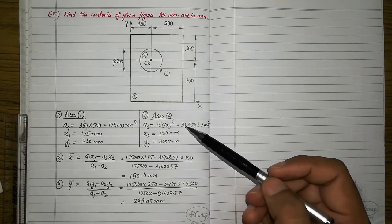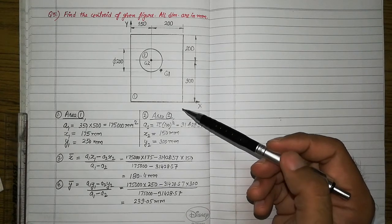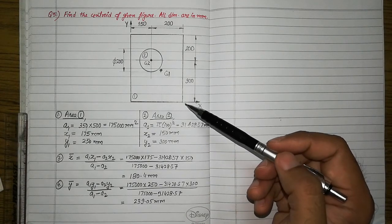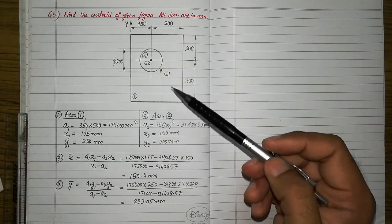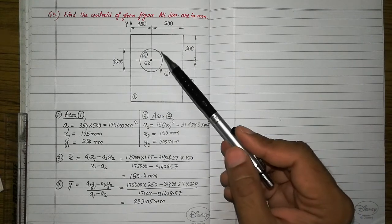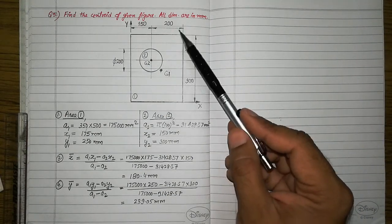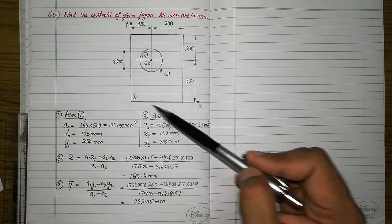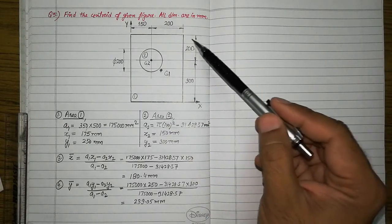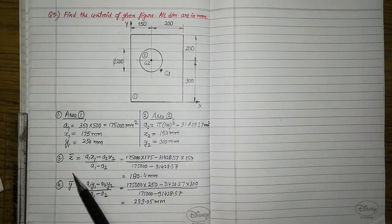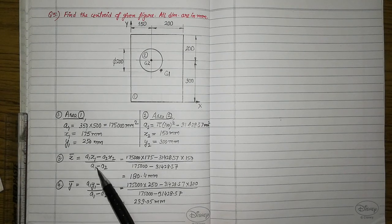I hope the procedure for solving an unsymmetrical composite area is now clear. What was new in this case was that we were given one hollow portion in the rectangular sheet. To find the centroid of this composite area while calculating x̄ and ȳ, we have to include the negative sign in the numerator as well as in the denominator. Thank you very much.